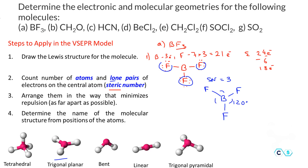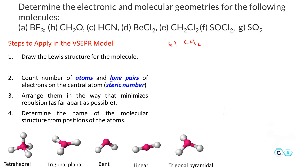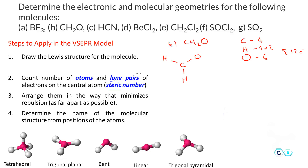Next is molecule B: CH2O, formaldehyde. The valence electrons are: carbon has 4, hydrogen has 1 each so 2 total for both, and oxygen has 6 (group 6), giving 12 electrons total. Based on Lewis structure rules, carbon goes in the middle with oxygen and the two hydrogens on the terminal sides. After making 3 bonds, 6 electrons are used.